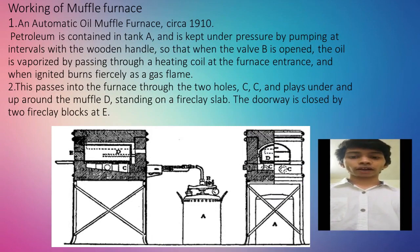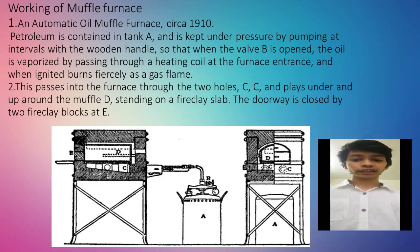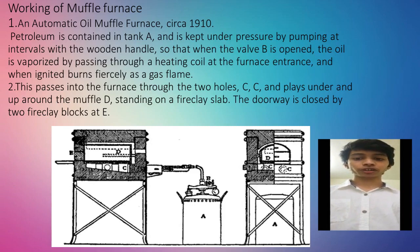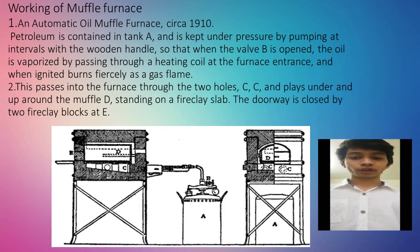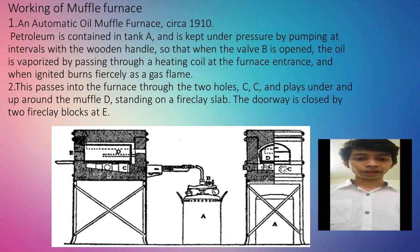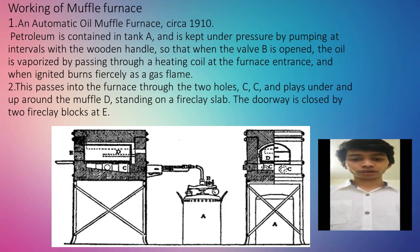Working of muffle furnace — an atomized oil furnace: petroleum is contained in tank A. I hope you can see the diagram. It is kept under pressure by pumping at intervals with the wooden handle, so that when valve B is open, the oil is vaporized by passing through a heating coil as it enters the furnace, and when ignited burns fiercely as a gas flame. This passes into the furnace through the two holes C and plays under and up around the muffle D, standing on a fireclay slab. The doorway is closed by two fireclay blocks at E.